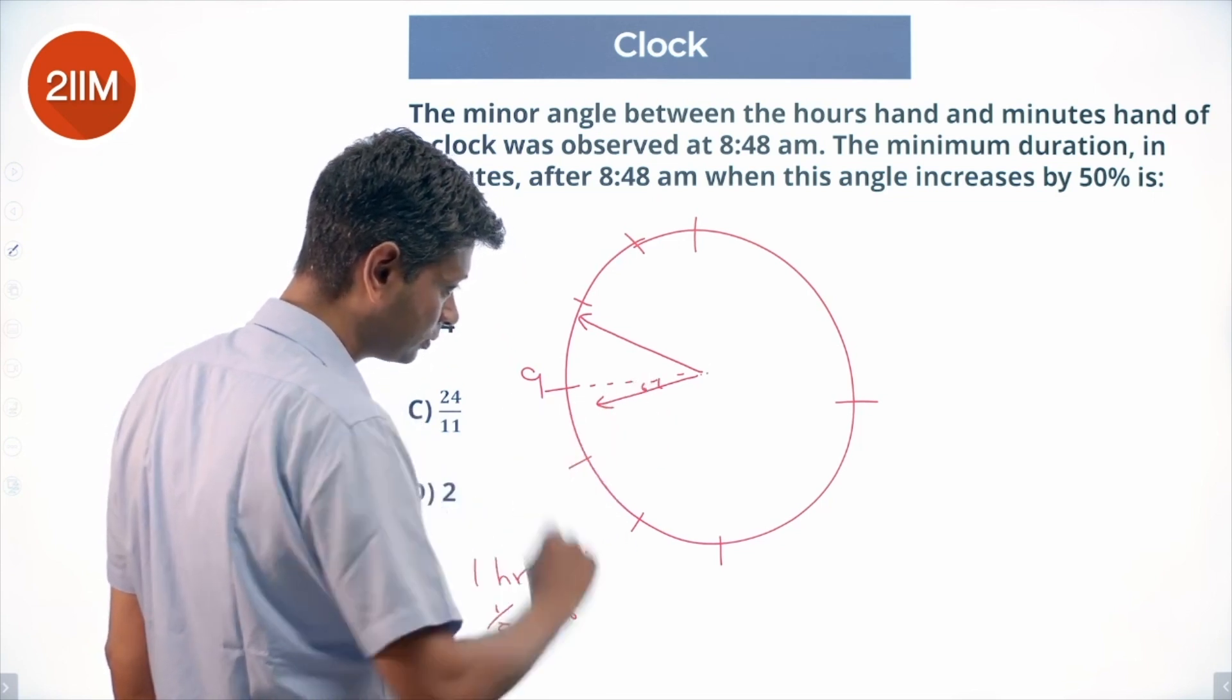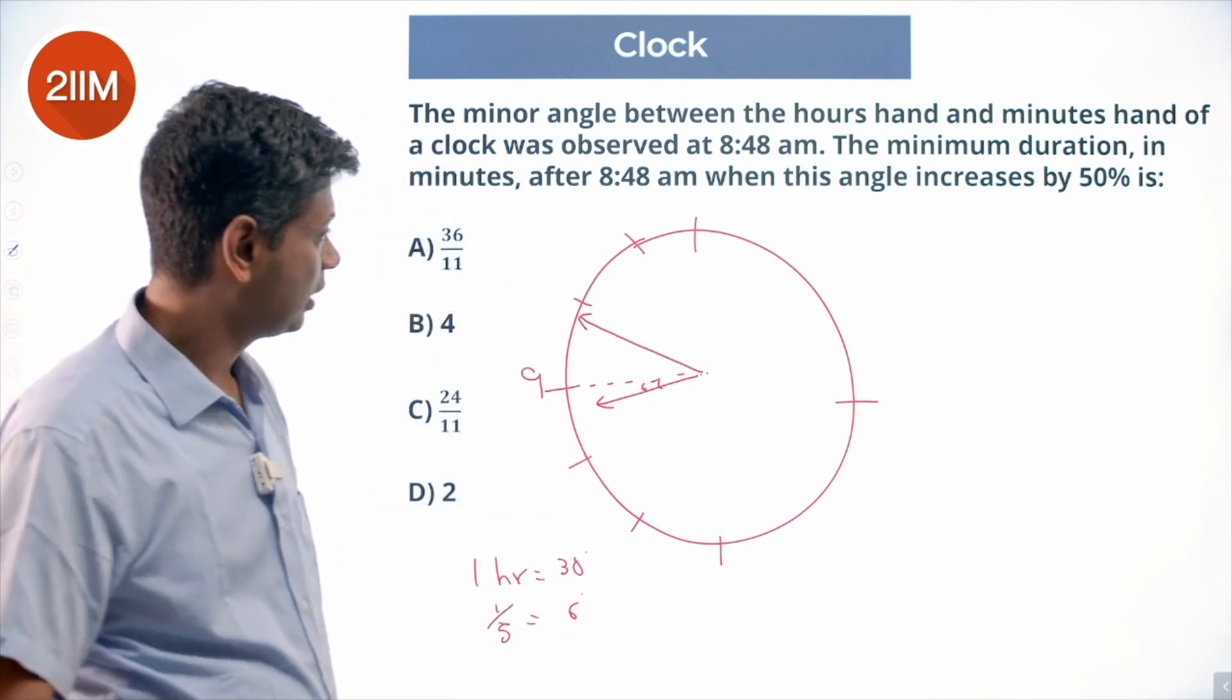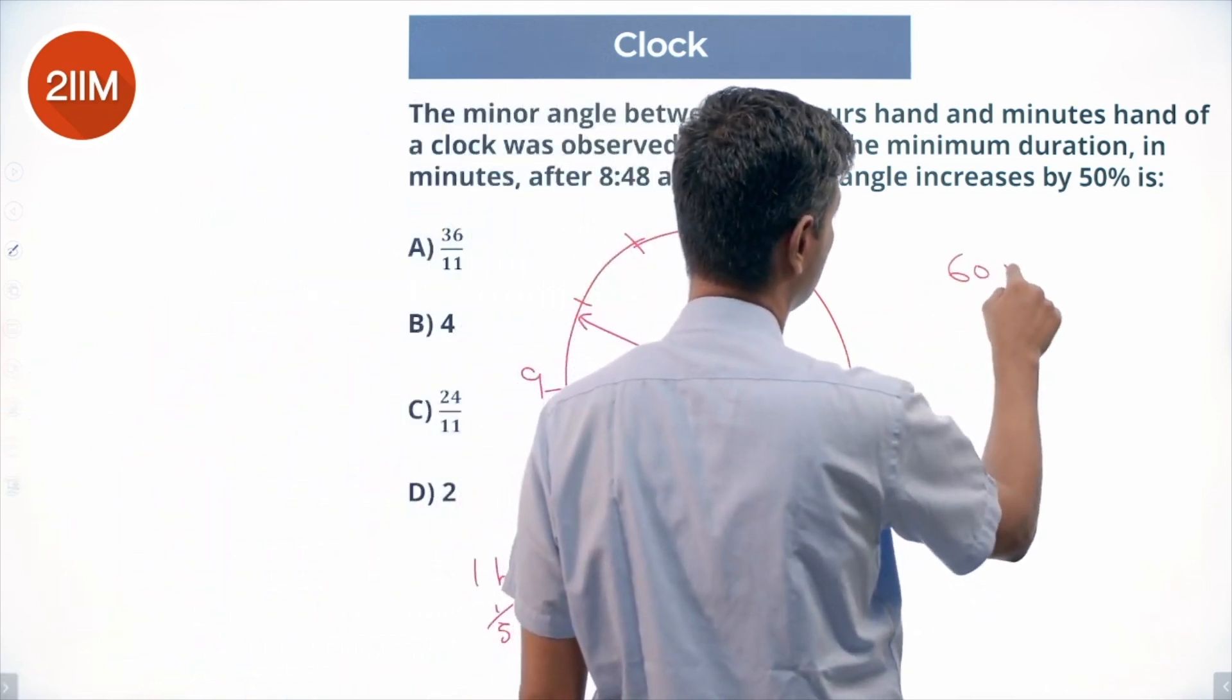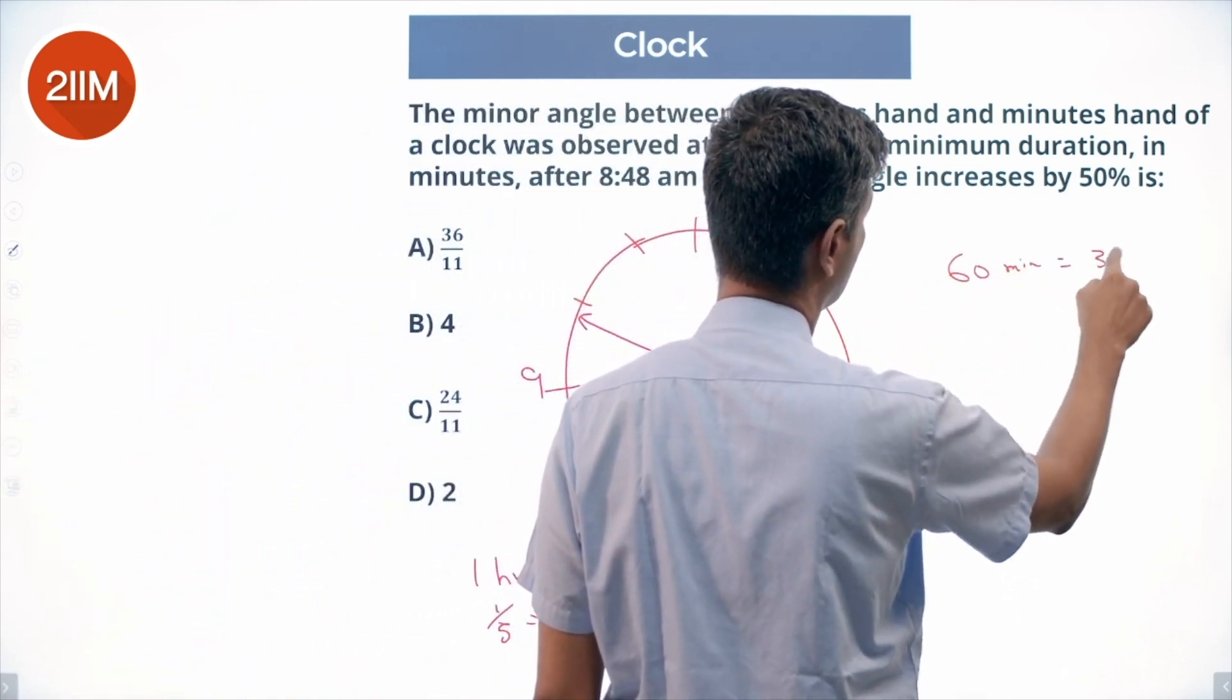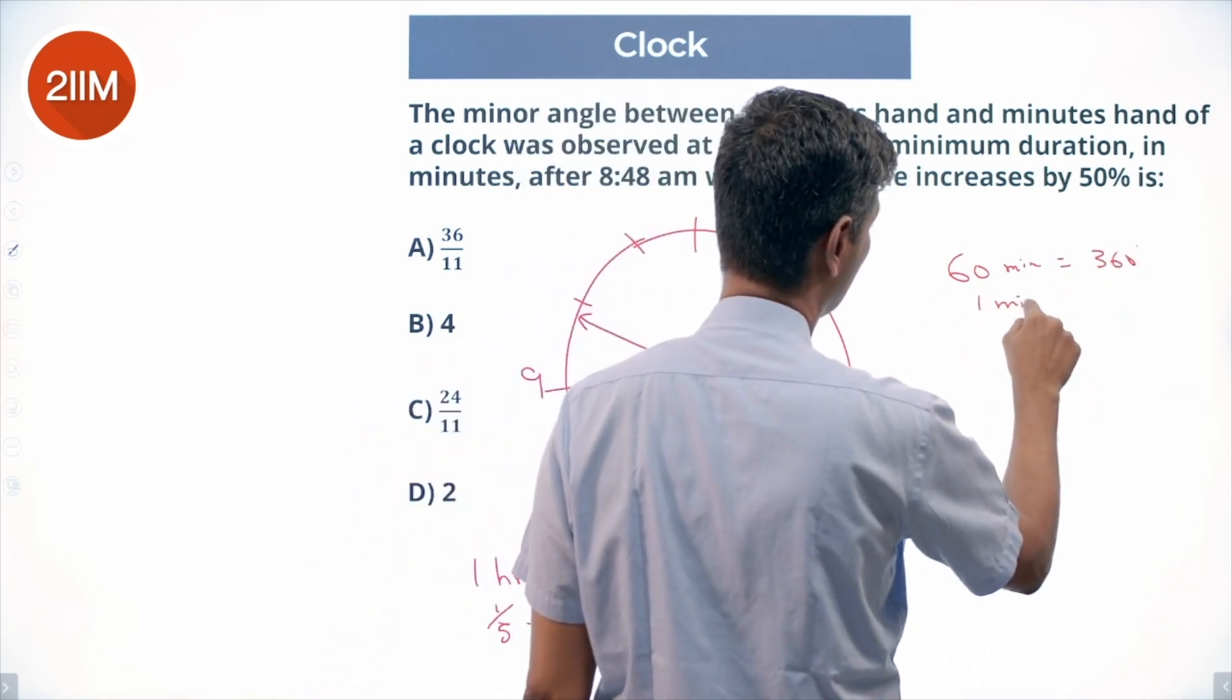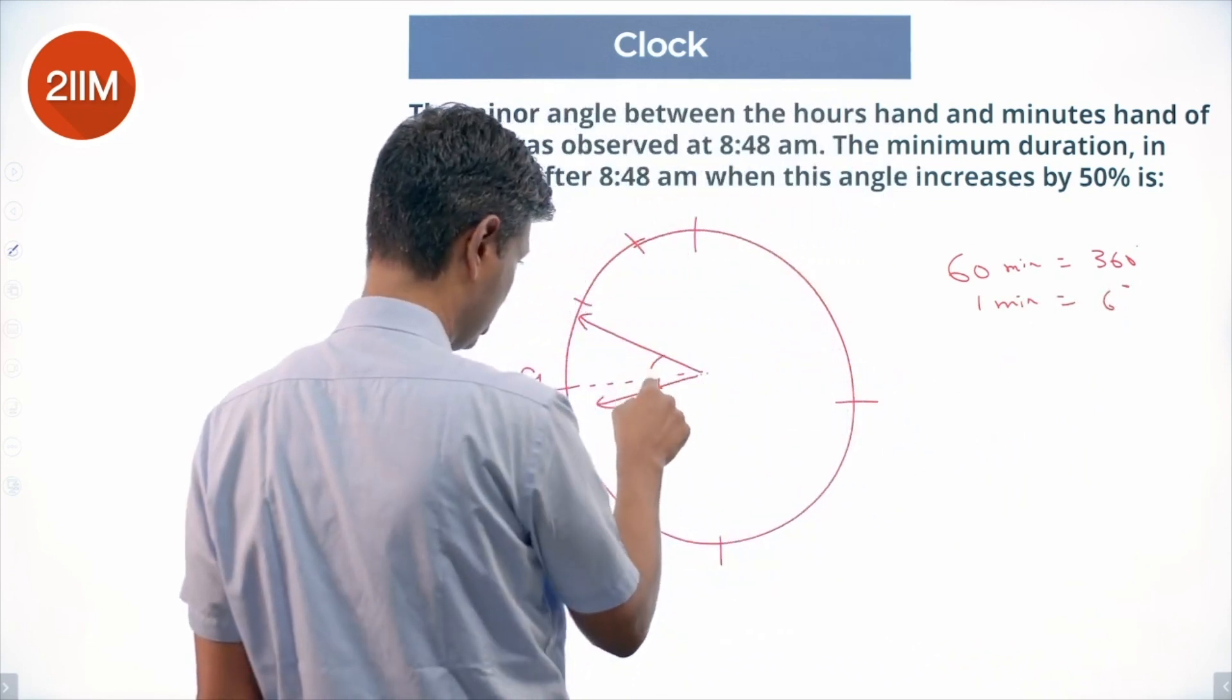Let us go to the minute hand. It is at 48. 60 minutes is 360 degrees, so 1 minute is 6 degrees. This is 3 minutes, this is 18 degrees.